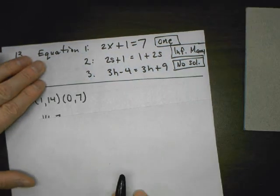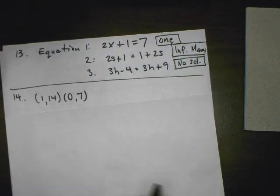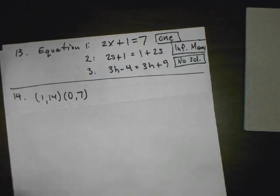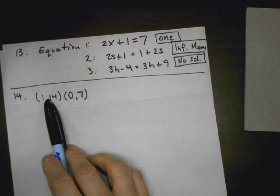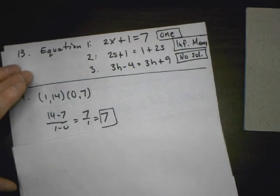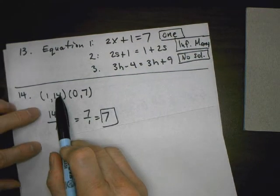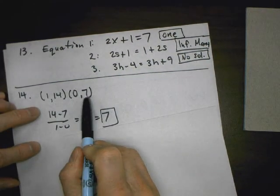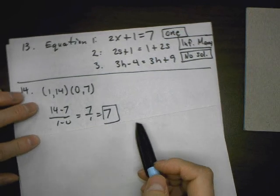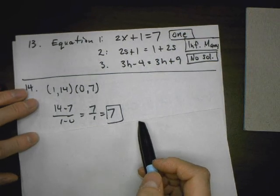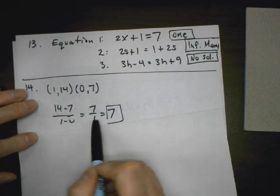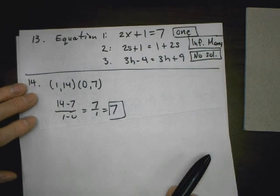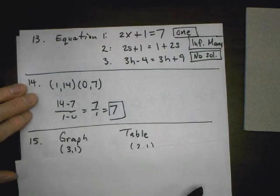Problem 14: what's the constant rate of change — in other words, the slope? I take the table they gave me and pick two points. I go y minus y over x minus x. 14 take away 7 is 7. 1 take away 0 is 1. 7 over 1 is 7. The constant rate of change is 7.